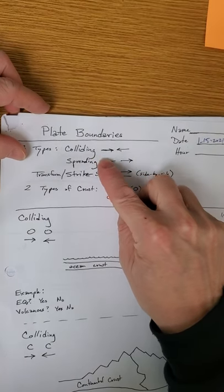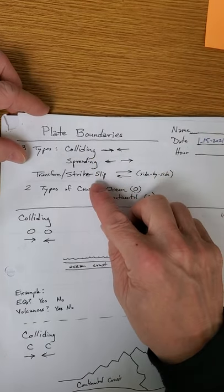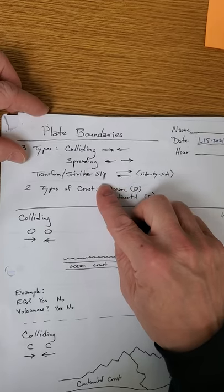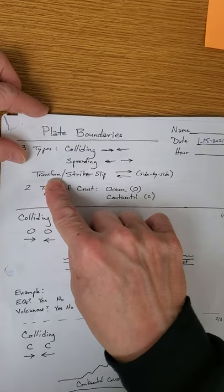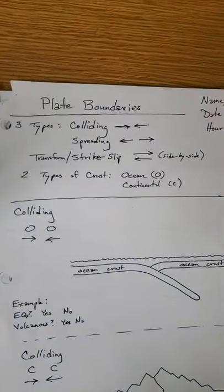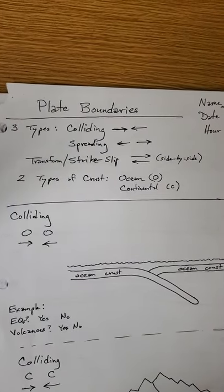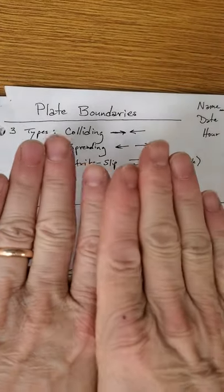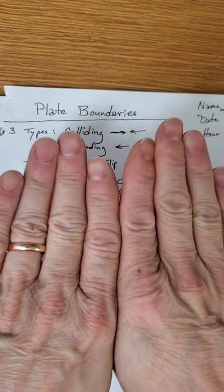They can run into each other, they can pull apart, or they can just go side by side. Those are the three basic ways. Colliding, spreading, and the fancy term for going side by side is transform or strike slip. Strike slip, that sounds weird.